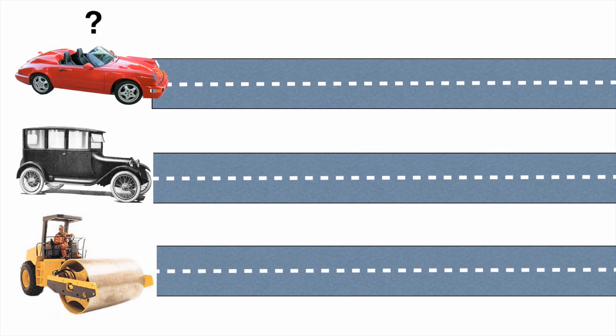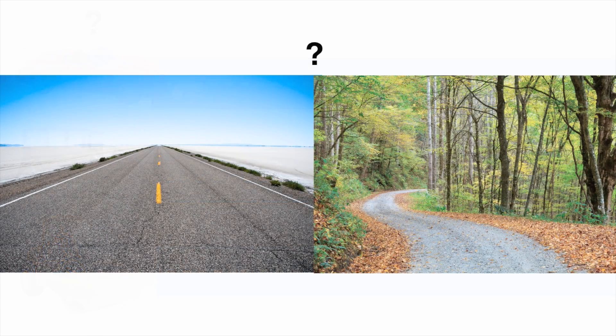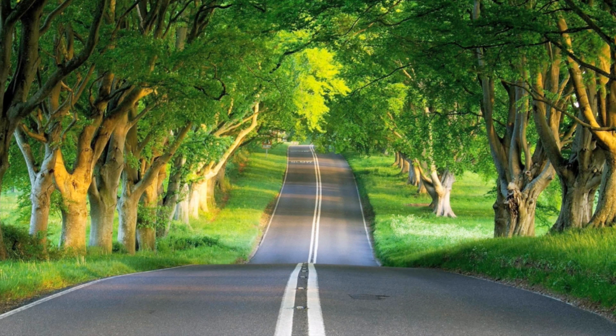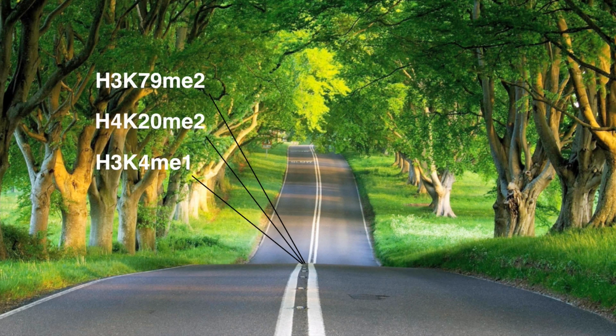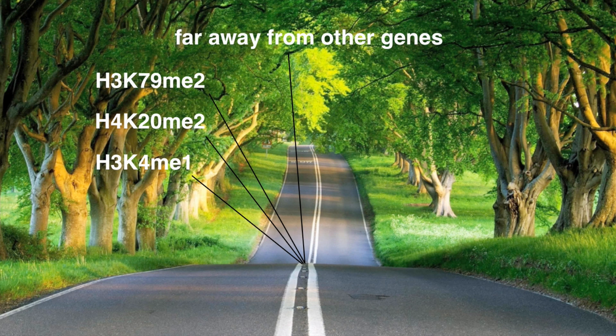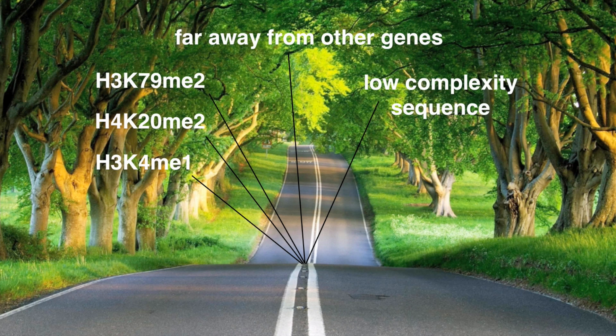Was it because the RNA polymerases were different for the different genes, or was it because of the specific features of the genes themselves? What we found was that certain features stimulated elongation rates, such as histone modifications, if the gene was far away from other genes, if it had a low-complexity sequence, or if the gene was long.